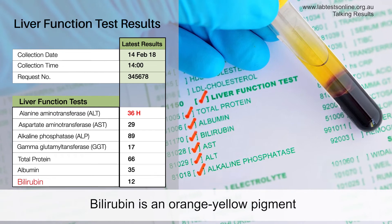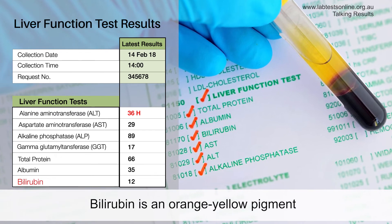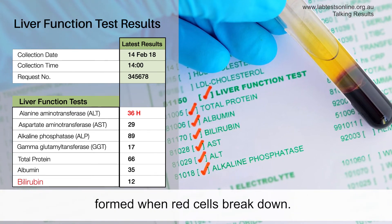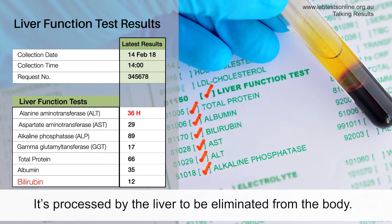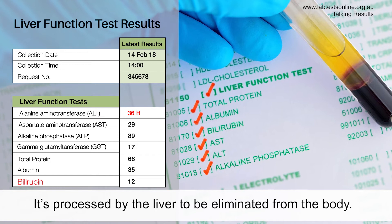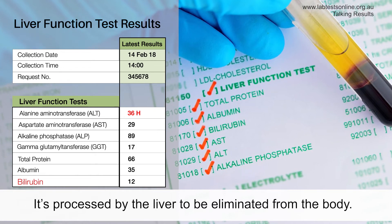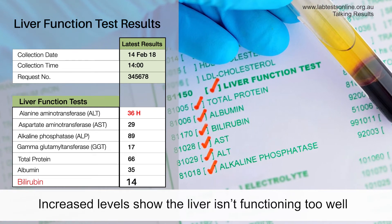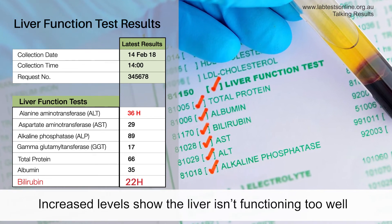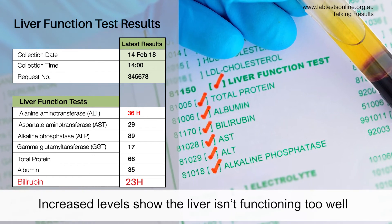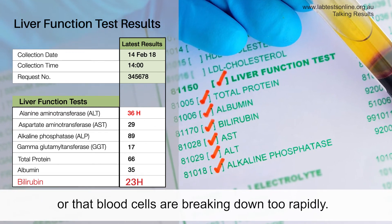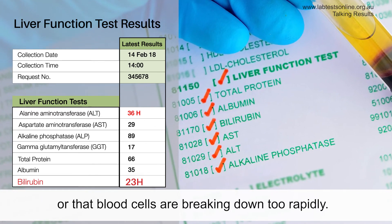Bilirubin is an orange-yellow pigment formed when red cells break down. It's processed by the liver to be eliminated from the body. Increased levels show the liver isn't functioning too well, or that blood cells are breaking down too rapidly.